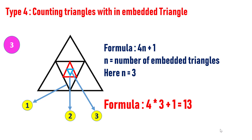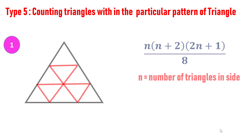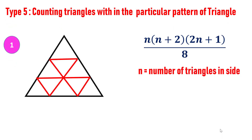Let's move on to the final pattern — type five. Here we count triangles within a particular complex pattern of triangle. The only trick is to use the formula: n into n plus 2 into 2n plus 1, divided by 8, where n equals the number of unit triangles on a side. I recommend remembering the formula rather than memorizing a table.